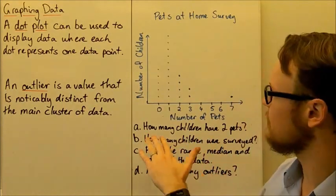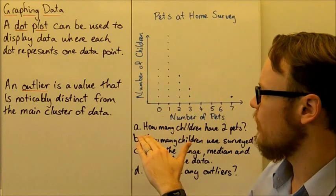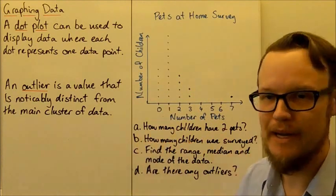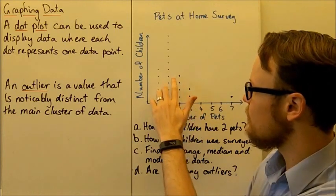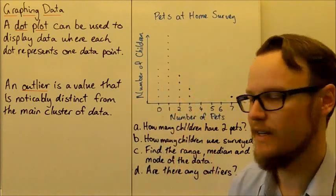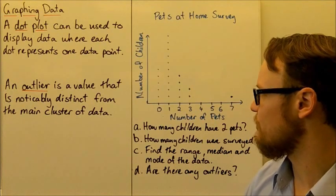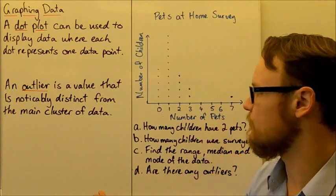I've got a few little questions here to ask about our graph. How many children have two pets? So if we have a look to the number of pets, two here, we can see these are the number of data points that we have. So four children surveyed said that they had two pets. So the answer to this first question is four children.